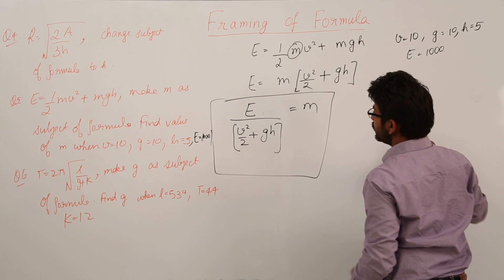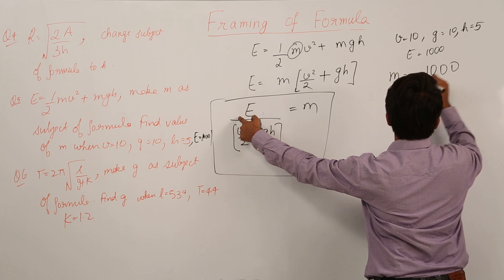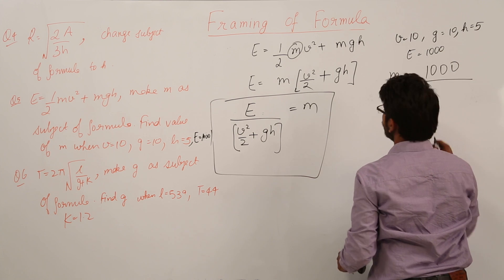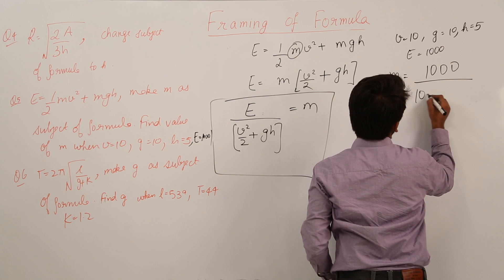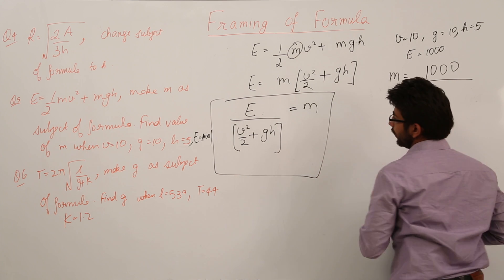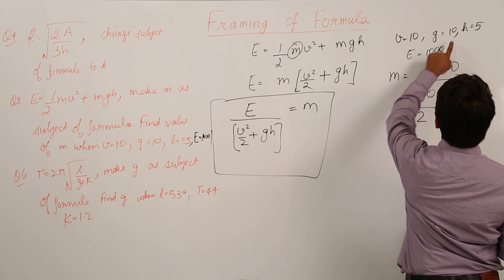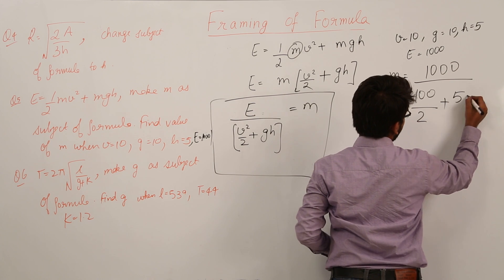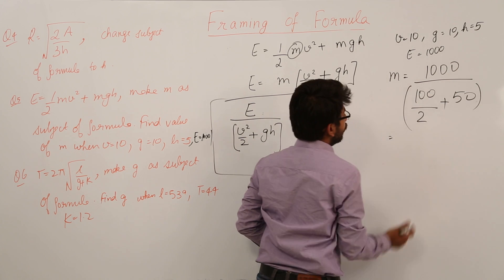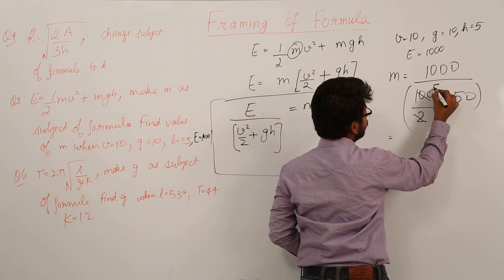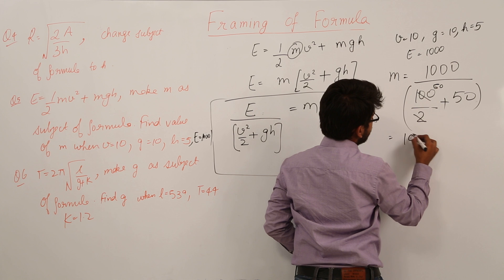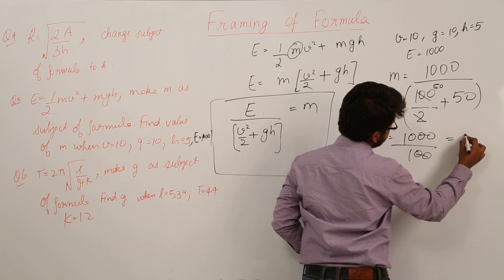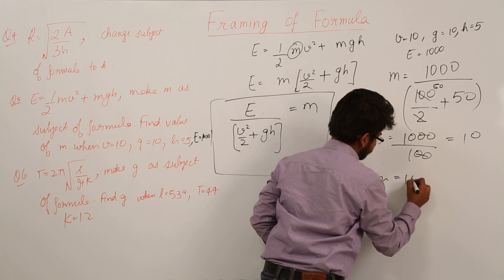We find m equals 1000 divided by v squared over 2 plus g times h. Here v equals 10, so v squared equals 100; 100 divided by 2 is 50. g times h is 10 times 5 which is 50. So 50 plus 50 is 100, giving m equals 1000 divided by 100, which means m equals 10.